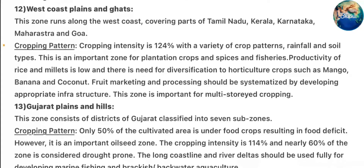Zone 12 – West Coast Plains and Ghats: This zone runs along the west coast covering parts of Tamil Nadu, Kerala, Karnataka, Maharashtra, and Goa. Cropping pattern: cropping intensity is low with a variety of crop patterns, rainfall, and soil types. This is an important zone for plantation crops, spices, and fisheries. Productivity of rice and millets is low and there is need for diversification to horticulture crops such as mango, banana, and coconut. Fruit marketing and processing should be systematized. This zone is important for multi-storey cropping.